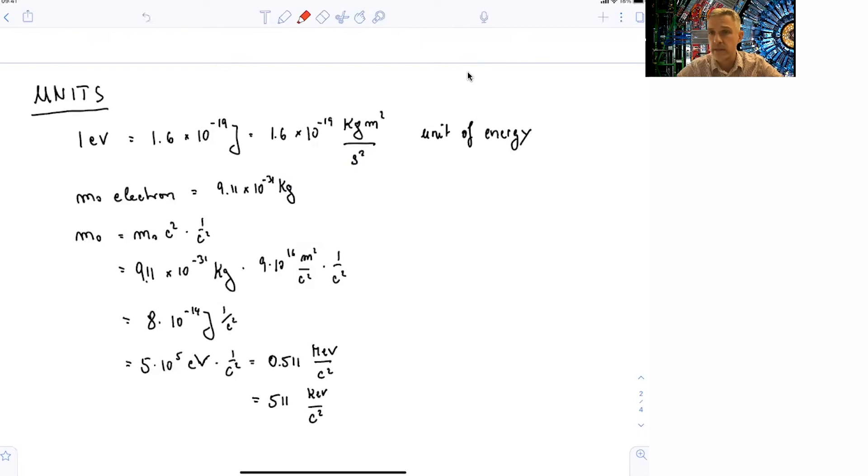So one electron volt is the kinetic energy of a particle with charge e, which is accelerated in a potential of 1 volt. So that corresponds at the unit of energy, and it corresponds to 1.6 times 10 to the minus 19 joule, or 1.6 times 10 to the minus 19 kilogram meter square over second square.